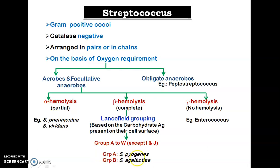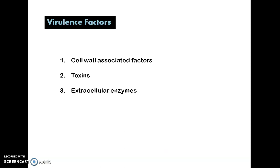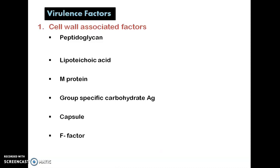Examples of Lancefield groups include group A Streptococcus pyogenes and group B Streptococcus agalactiae, which are important pathogens of human importance. Coming to the virulence factors, similar to Staphylococcus, there are three important virulence factors: cell wall associated factors, toxins, and extracellular enzymes. First we will see cell wall associated factors.